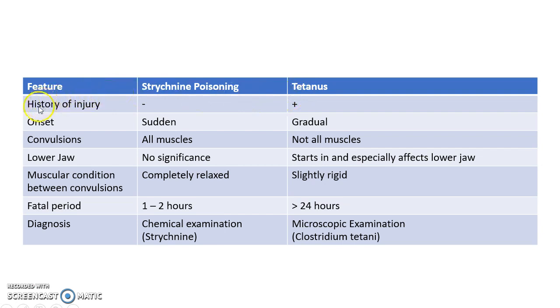In case of Strychnine poisoning there won't be any history of injury, whereas in tetanus there will be a history of injury. In Strychnine poisoning there will be history of exposure to the poison.